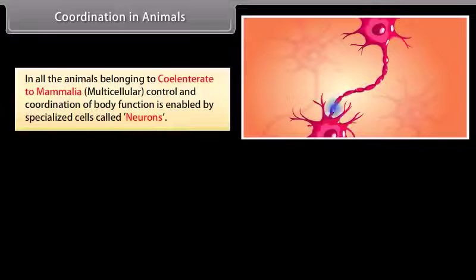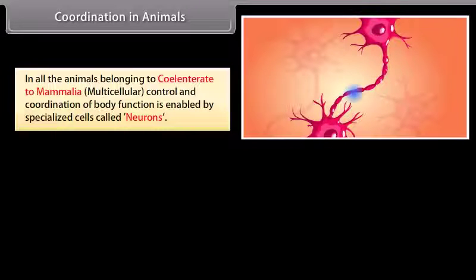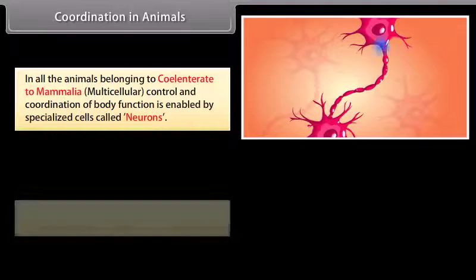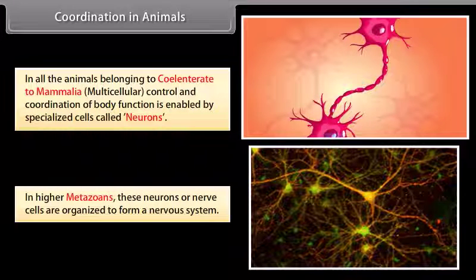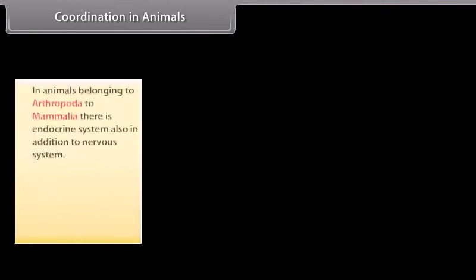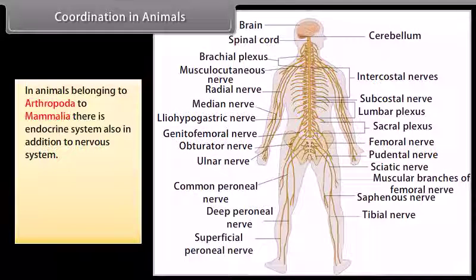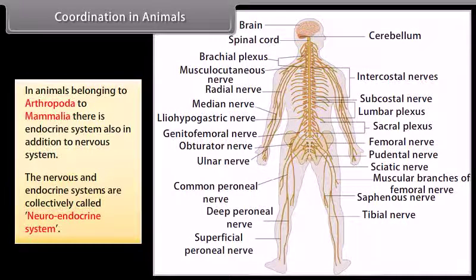In all animals belonging to coelenterata to mammalia, multicellular control and coordination of body functions is enabled by specialized cells called neurons. In higher metazoans, these neurons or nerve cells are organized to form a nervous system. In animals belonging to arthropoda to mammalia, there is an endocrine system also in addition to the nervous system. The nervous and endocrine systems are collectively called the neuroendocrine system.